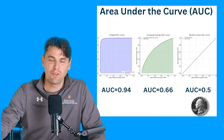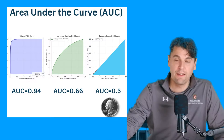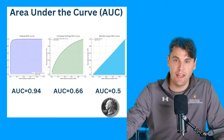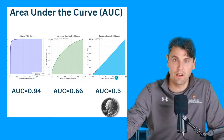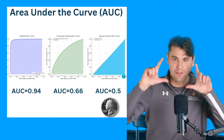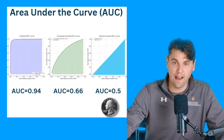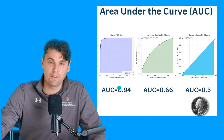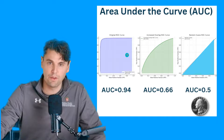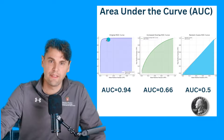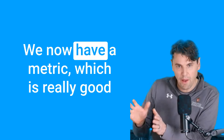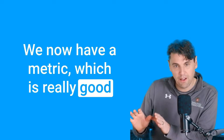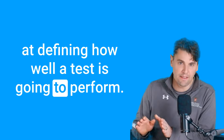We love three-letter acronyms in medical imaging, so the area under the curve we call the AUC. If you start with just a coin flip, you get 0.5 — one half of the area of the square. For the test with more overlap between those Gaussians, the AUC was 0.66. And for the test where there was not very much overlap between the two, the AUC was 0.94. We now have a metric that's really good at defining how well a test is going to perform.